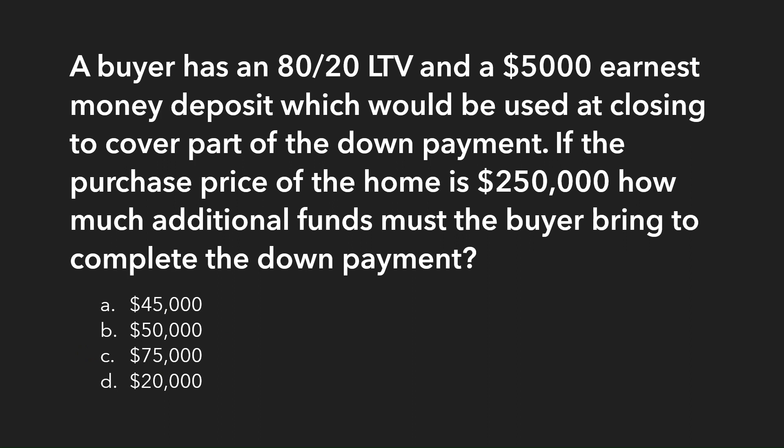Question four: A buyer has an 80-20 LTV and a $5,000 earnest money deposit, which will be used at closing to cover part of the down payment. If the purchase price is $250,000, how much additional funds must the buyer bring to complete the down payment? Remember, on the exam you get scratch paper. LTV is 80-20, meaning 80% is the loan and 20% is the down payment. Grab your calculator and find 20% of $250,000.